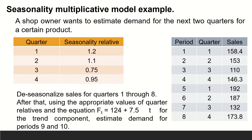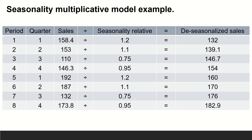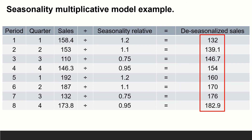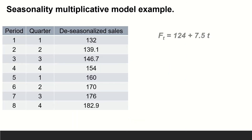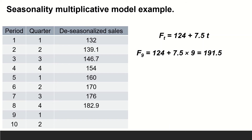De-seasonalize sales for quarters 1 through 8. To de-seasonalize the data, each quarter's sales has to be divided by its corresponding relative. It is clear that the resultant de-seasonalized data are increasing regularly and can be expressed by a linear trend. The trend equation is given, so we can use it to calculate the sales for periods 9 and 10. Thus, F9 = 124 + 7.5 × 9 = 191.5, and F10 = 124 + 7.5 × 10 = 199.